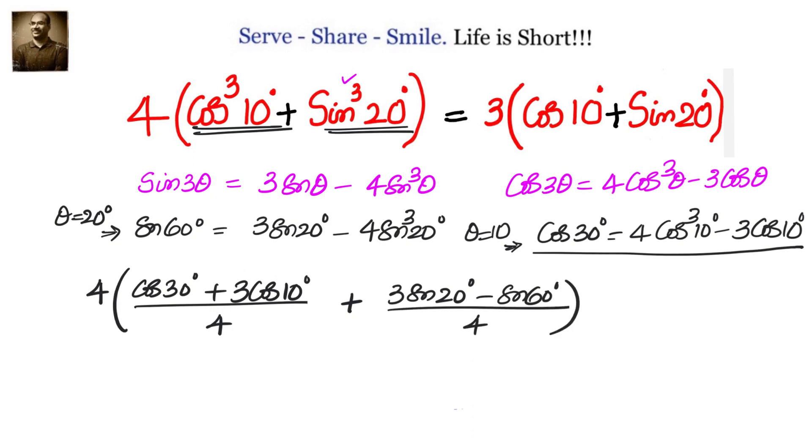Hopefully you are clear with that. From here we are getting cos cube 10. This will come to this side: cos 30 plus 3 cos 10 divided by 4. Similarly, sin cube 20 is 3 sin 20 minus sin 60, divided by 4.